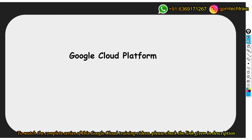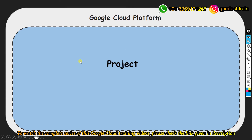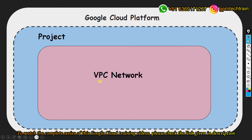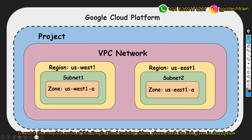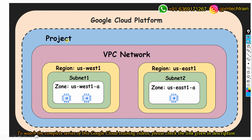Let's understand VPC on a very high level with a scenario. Consider this is the Google Cloud Platform. Whenever you create a new project within Google Cloud Platform, automatically, by default, a VPC network is created — this is referred to as the default VPC. Whatever resources you add under this project will by default be part of this network, as we discussed earlier.